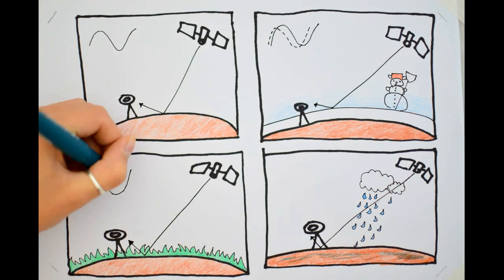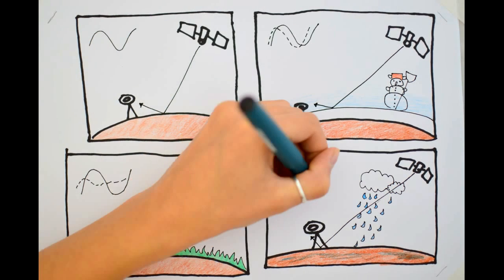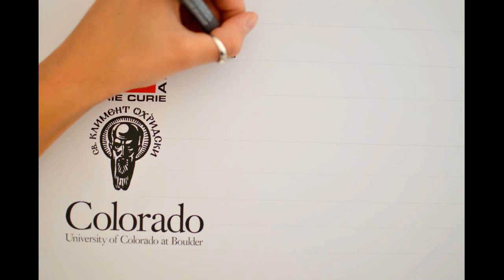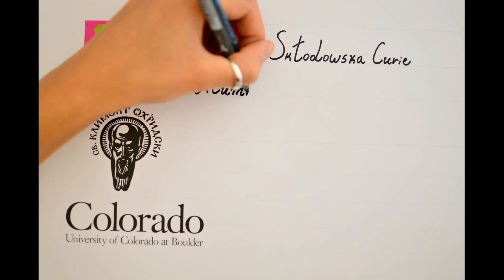In addition, the reflected signal also varies with the snow cover and vegetation. So this is how we can measure soil moisture using the Global Navigation Satellite Systems.